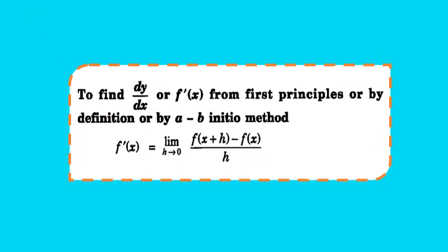Now if we have to find the differentiation or derivation of a function dy/dx or f'(x), it is derived using the formula: f'(x) = limit h tends to 0 of [f(x+h) - f(x)] / h. This method is called the first principle of derivation, or first principle of differentiability.